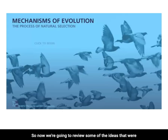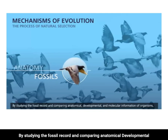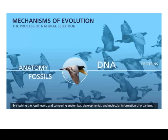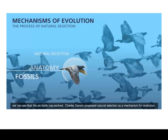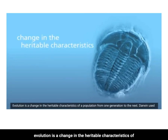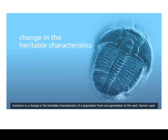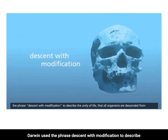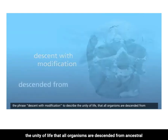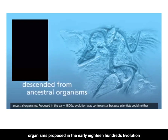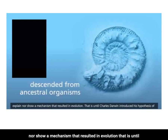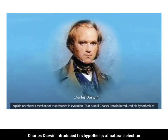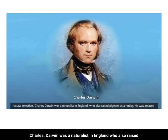Now we're going to review the ideas covered in this lecture. By studying the fossil record and comparing anatomical, developmental, and molecular information of organisms, we can see that life on earth has evolved. Charles Darwin proposed natural selection as a mechanism for evolution. Evolution is a change in the heritable characteristics of a population from one generation to the next. Darwin used the phrase 'descent with modification' to describe the unity of life — that all organisms are descended from ancestral organisms. Proposed in the early 1800s, evolution was controversial because scientists could neither explain nor show a mechanism, until Charles Darwin introduced his hypothesis of natural selection.